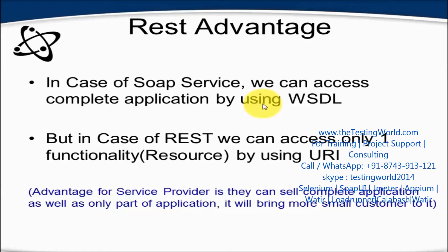If that service is developed in SOAP, as a customer I have to buy the complete service because there is no option of purchasing only one or a few functionalities. But in the case of REST, I can approach the company and buy only one functionality by using a URI.